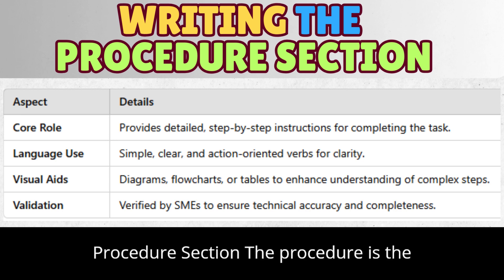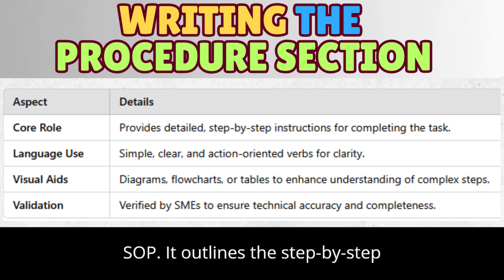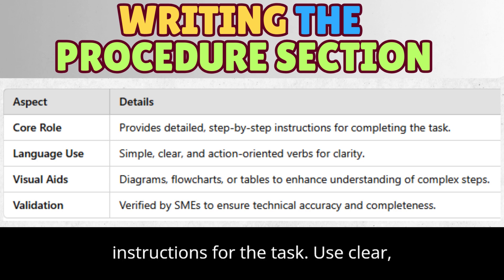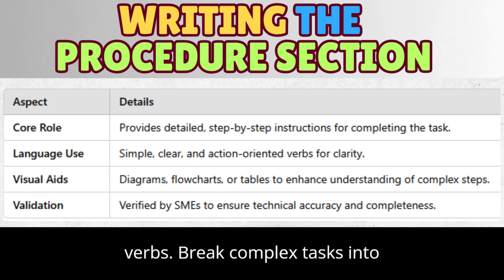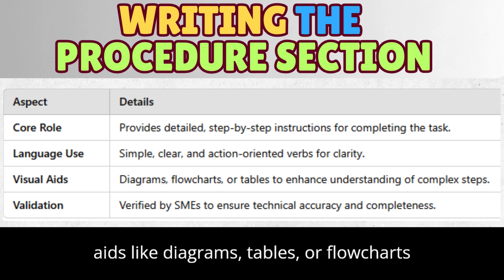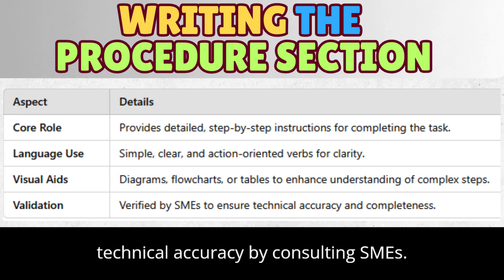Writing the procedure section: The procedure is the most detailed and critical part of an SOP. It outlines the step-by-step instructions for the task. Use clear, precise language and action-oriented verbs. Break complex tasks into smaller, logical steps. Include visual aids like diagrams, tables, or flowcharts to enhance comprehension. Always ensure technical accuracy by consulting SMEs.